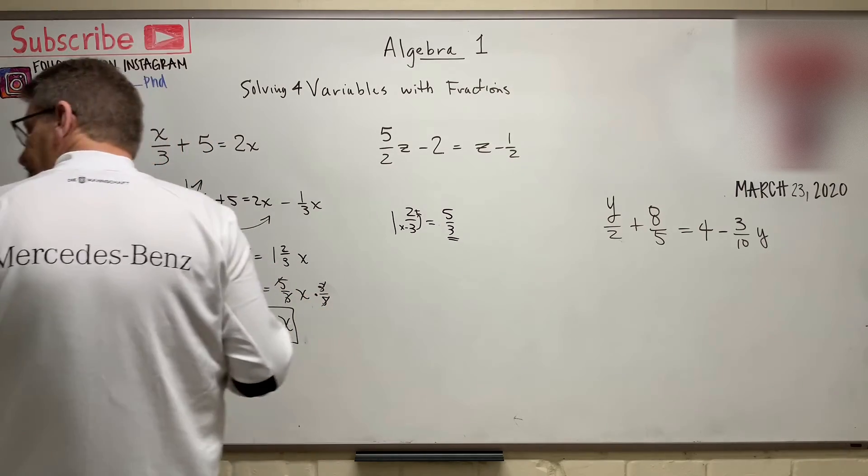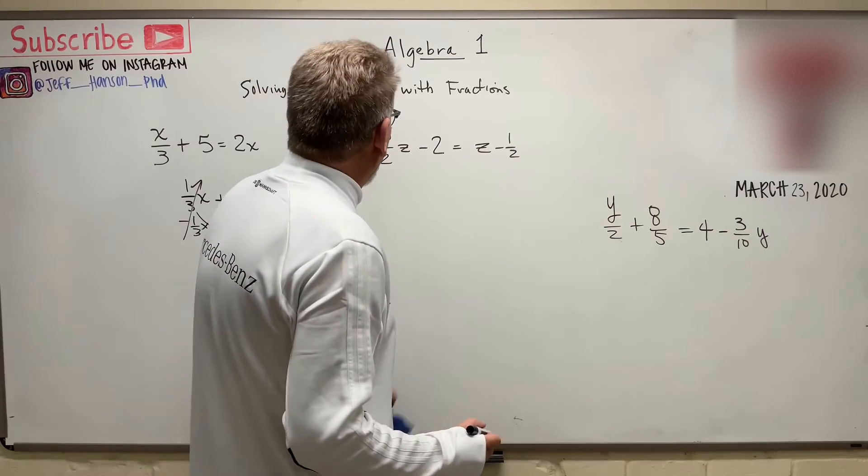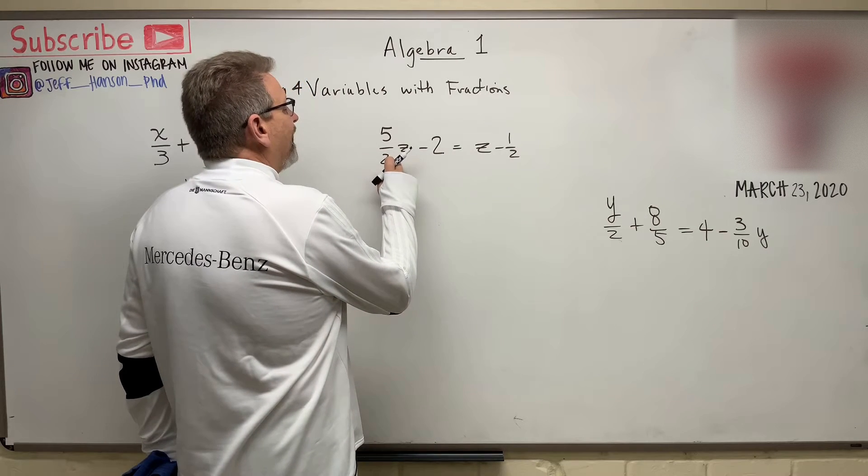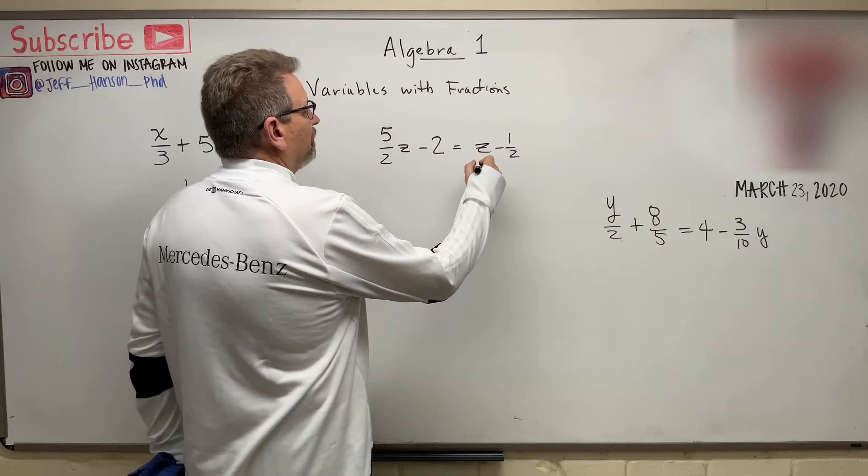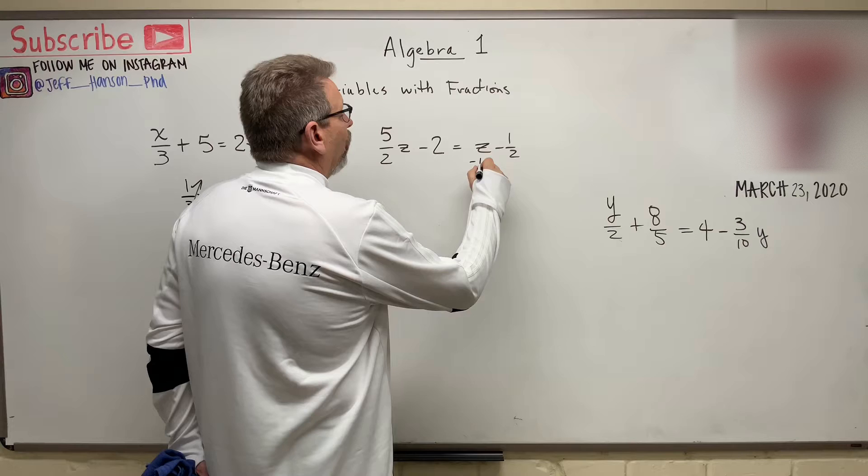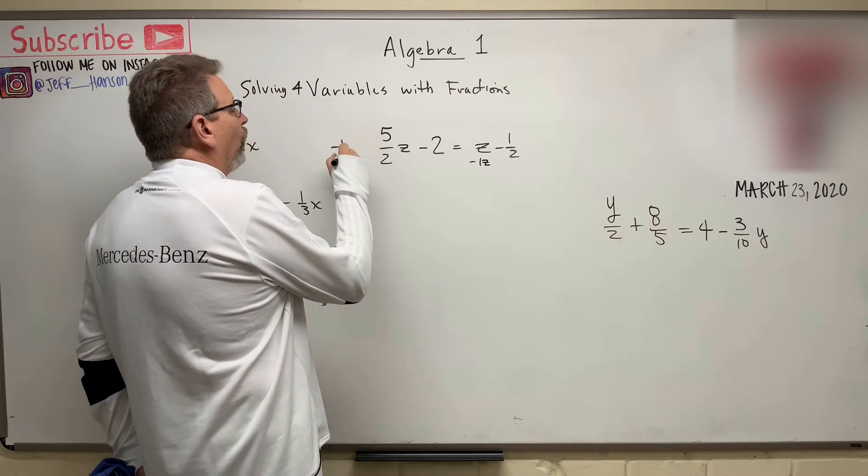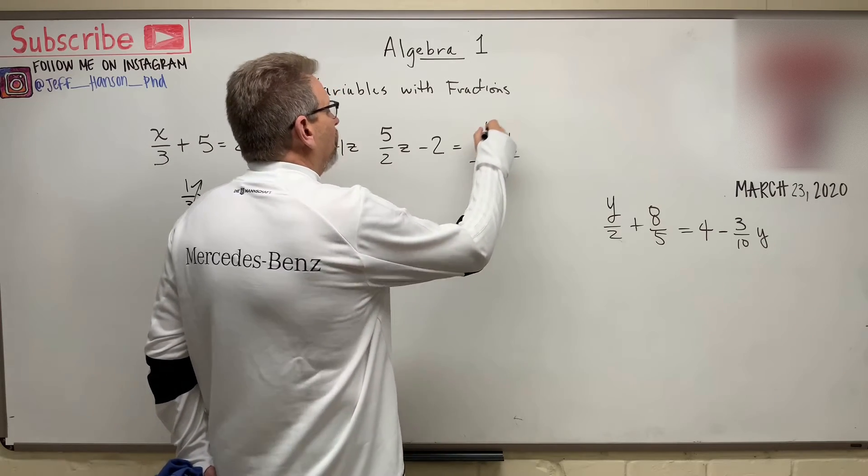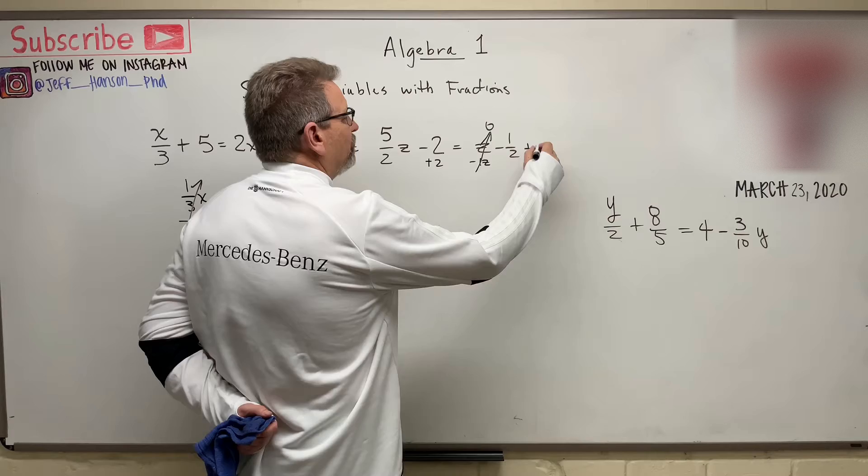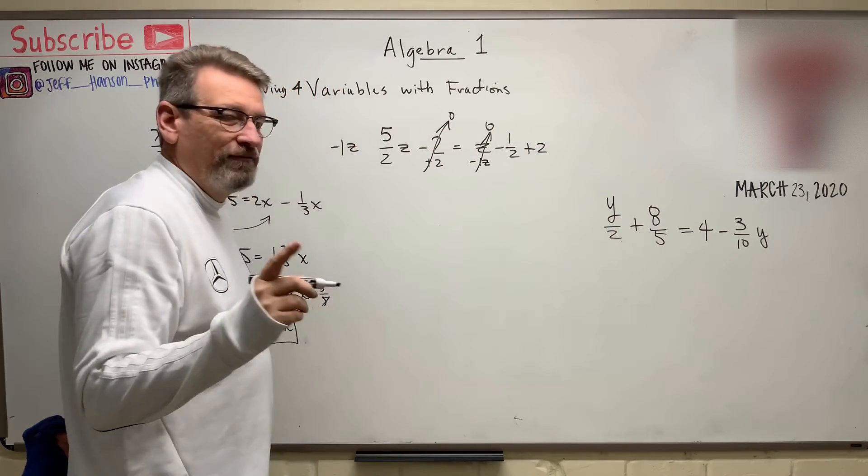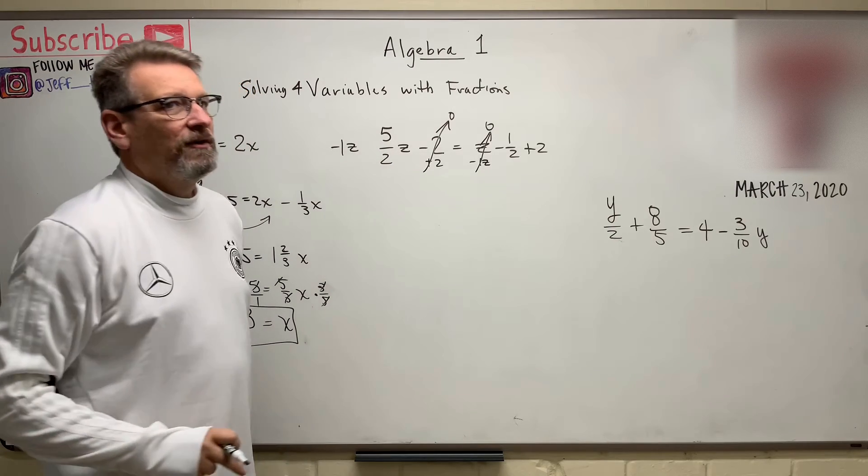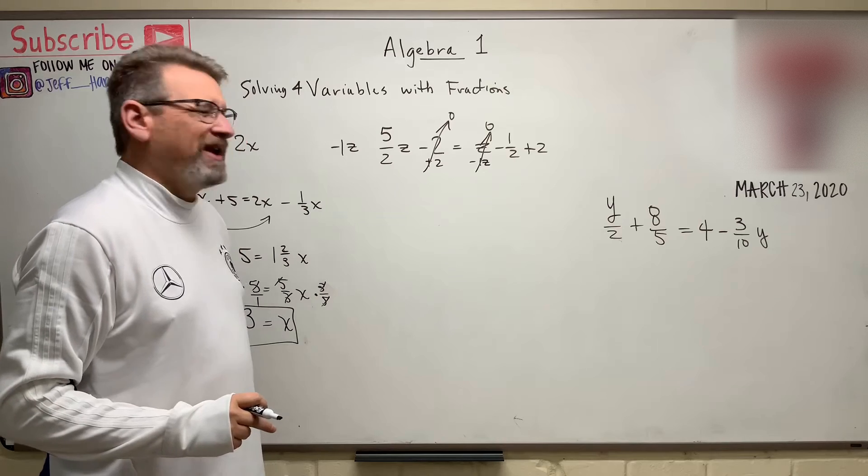All right, let's try it again. Same thing, here we go. I've got 5 halves over here. So let's get rid of this Z. Now, what is Z? That's 1Z, isn't it? So let's subtract 1Z from this side, and we'll subtract 1Z from that side. So that goes into 0. And then, how about we do this? We add 2 to this side, and we can add 2 to that side. So, 5 halves. What is 5 halves? How many times does 2 go into 5? It goes in there 2 times with a remainder of 1, so it goes in there 2 and a half times.